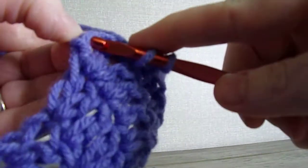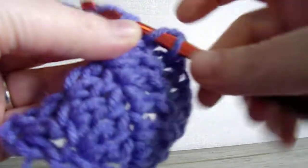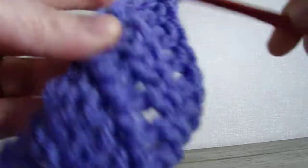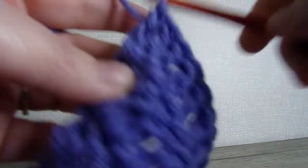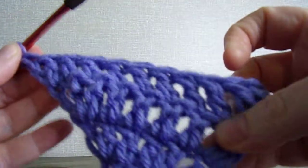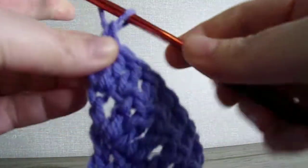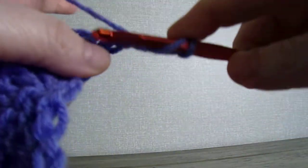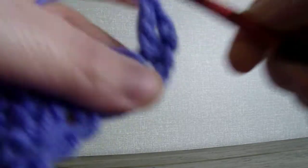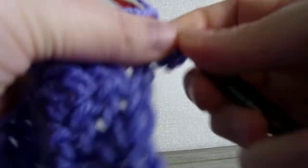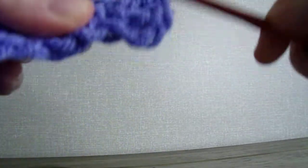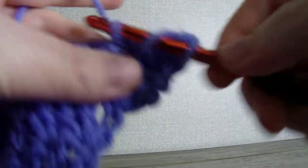Two double crochets—that's one and two. Chain 2, turn your work. Into the very first stitch, two double crochets. Next stitch and all the way across, one double crochet in each stitch.